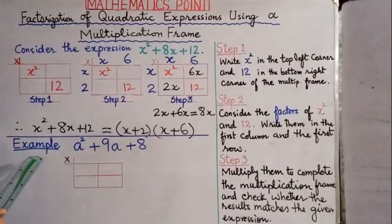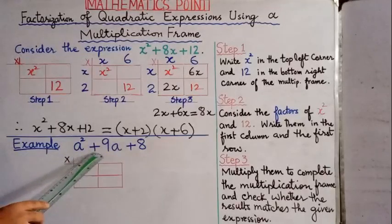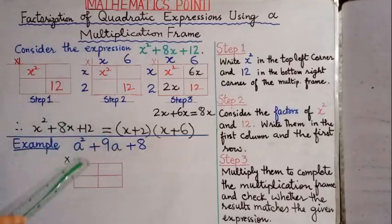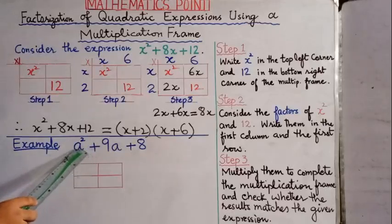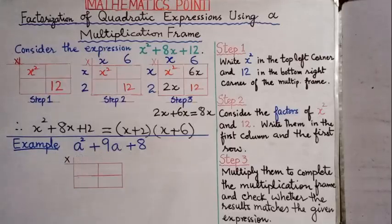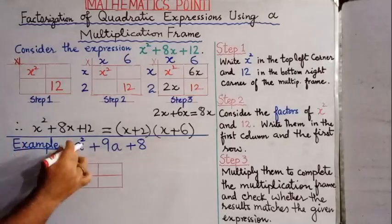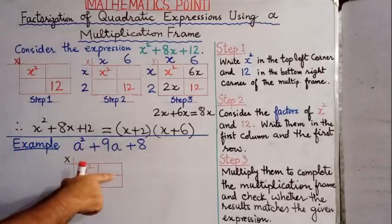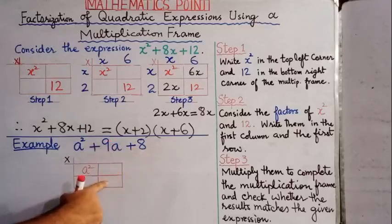Now we are going to solve another example. The expression is a² + 9a + 8. We will apply the multiplication frame method to factorize this expression. In step 1, we write a² in the top left corner and 8 in the bottom right corner. This is our first step.